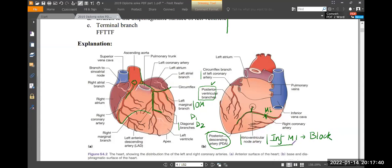Right coronary artery, the branch at the bottom—right marginal artery, that's it. So, right coronary artery proximal occlusion, what will happen?